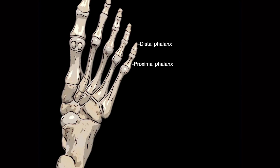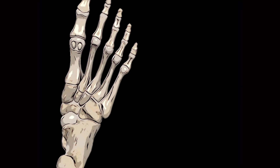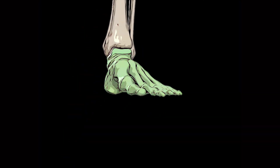Each toe, with the exception of the big toe, has a proximal phalangeal bone closest to the metatarsals, a distal phalangeal bone which forms the tip of the toe, and an interphalangeal bone interposed between the two. The big toe only has a proximal phalanx and a distal phalanx. These bones articulate at hinge joints which allow limited flexion and extension of the toes. The sesamoid bones are embedded within the flexor hallucis brevis tendon, which they protect and increase its movement.